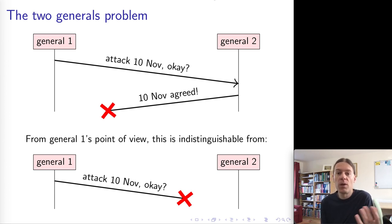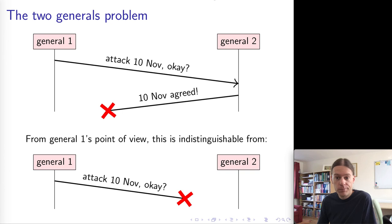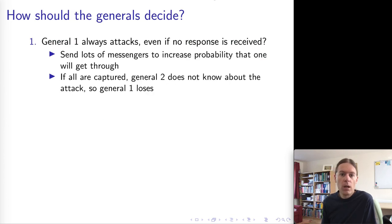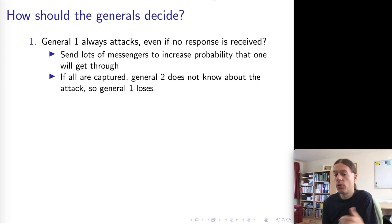General one does not know whether there's no response because the initial message didn't get through, or because the response was lost. There's a big difference between the two: from general two's point of view, in the first case general two has agreed to attack, but in the second case general two doesn't even know about the attack. They look the same from general one's point of view but very different from general two's point of view. So let's try to design an algorithm to get the two generals into agreement, starting from general one's perspective. General one basically has two choices.